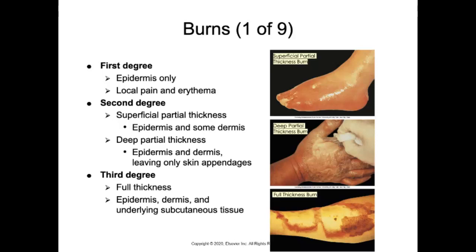Burns can come from thermal or non-thermal sources, including chemical, electrical, or radioactive sources. To identify a burn injury, we look at the level of tissue destruction, which gives us a better perspective for clinical management, healing, and mortality. Burns are categorized into first, second, third, and fourth degree.